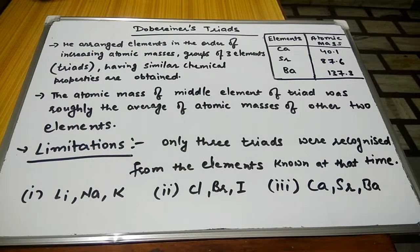On the right side you can see calcium, strontium and barium. If you try to calculate the average of first and the third, that is calcium and barium, it is going to be roughly near about 87, which is of strontium.